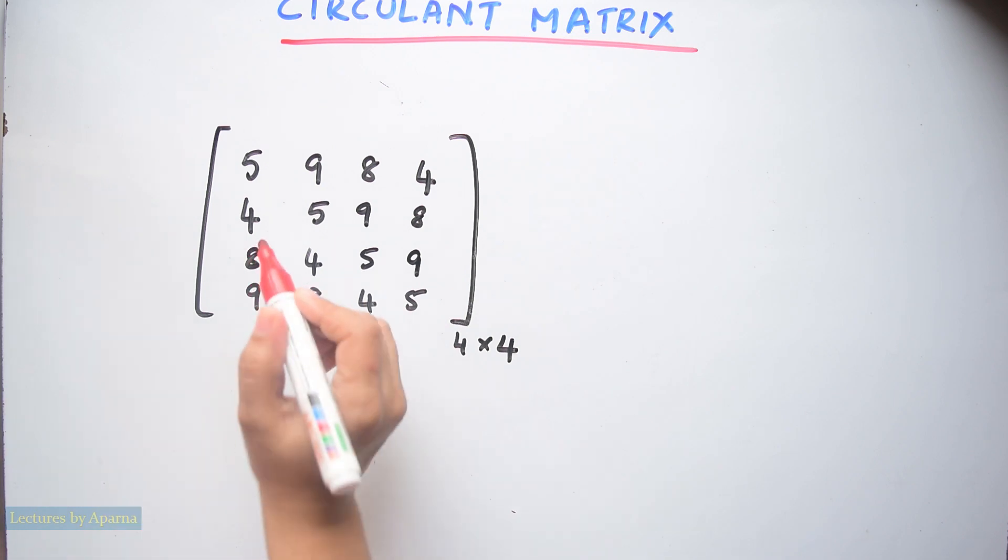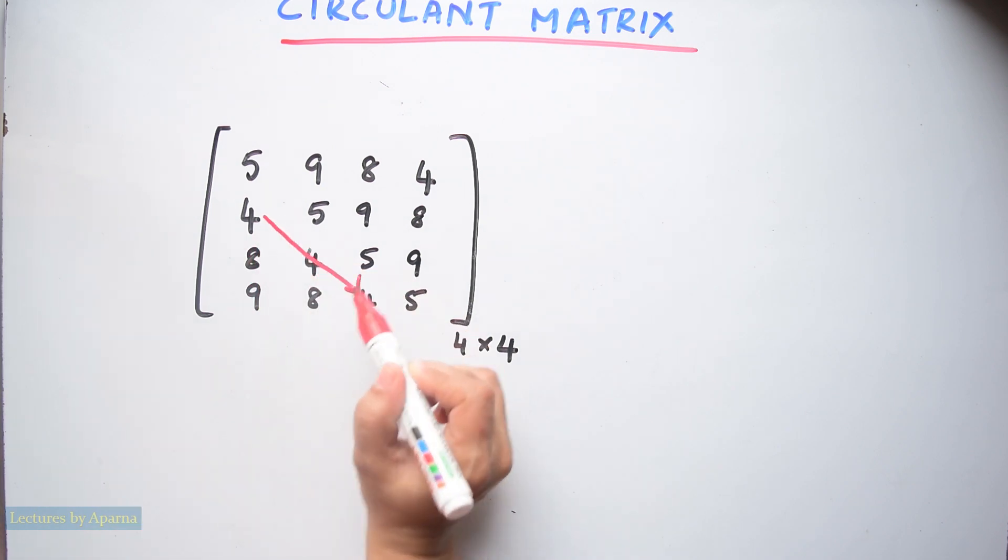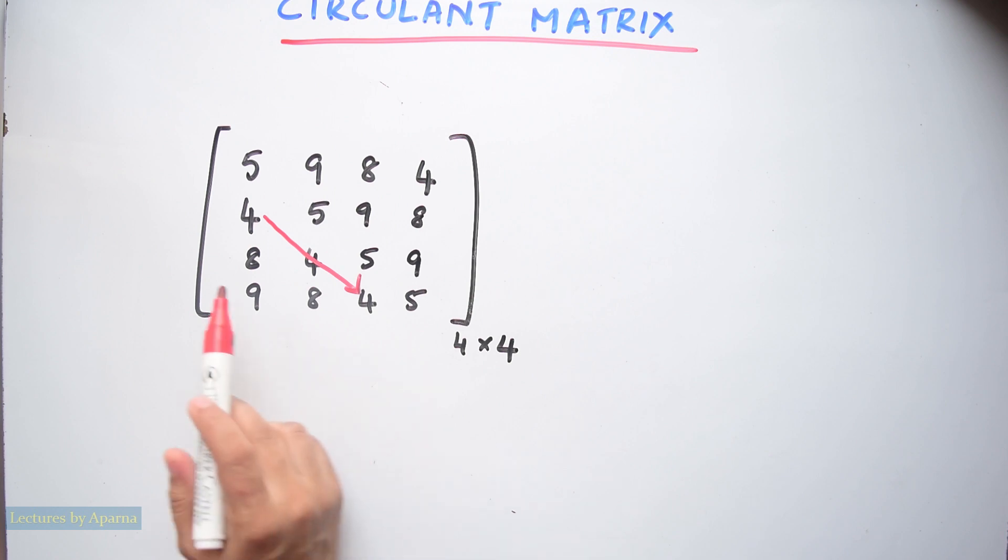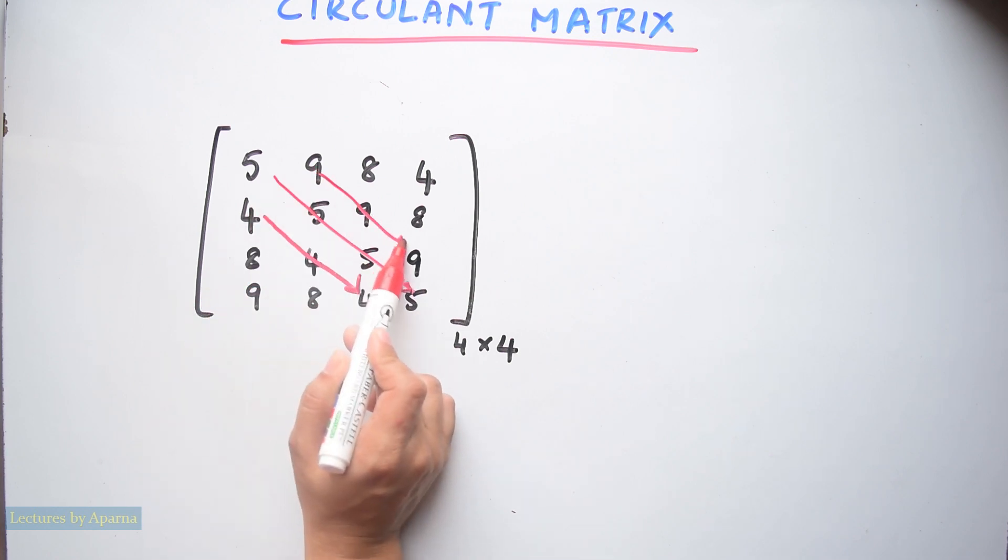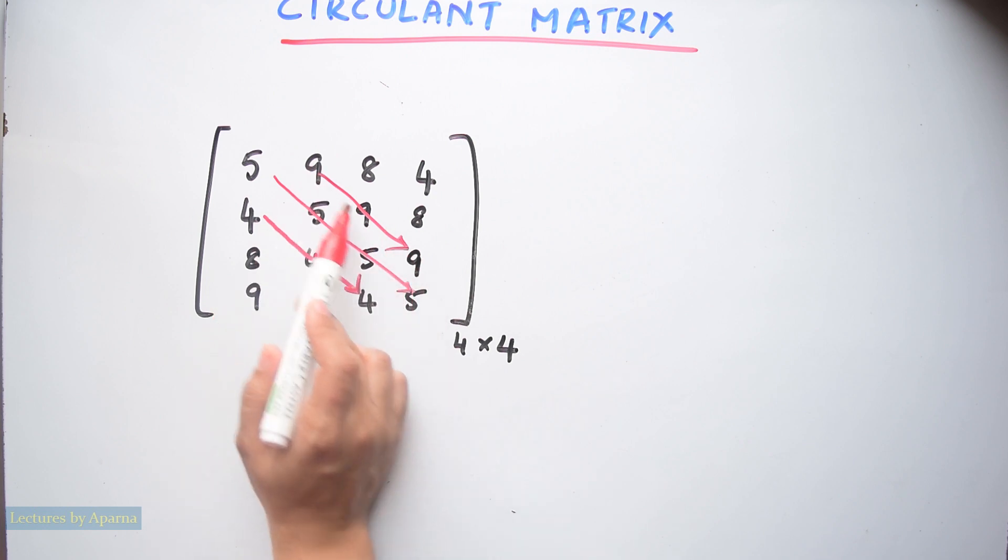You can see that the descending diagonals from left to right is a constant here. Descending diagonal means these diagonals. So all elements coming in this particular diagonal is same. In this particular diagonal is same. In this particular diagonal is same.